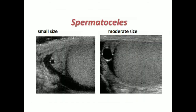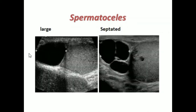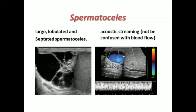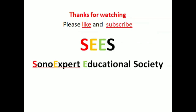This image shows a small-size spermatocele, this is a moderate-size spermatocele, this is a large spermatocele, and this is a septated spermatocele. This is a large lobulated septated spermatocele. This image shows acoustic streaming, which should not be confused with blood flow on color Doppler or grayscale. Thank you for watching. I hope I have delivered the message to my professional colleagues and students.